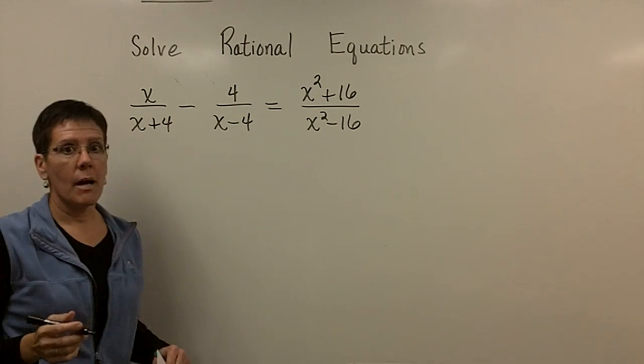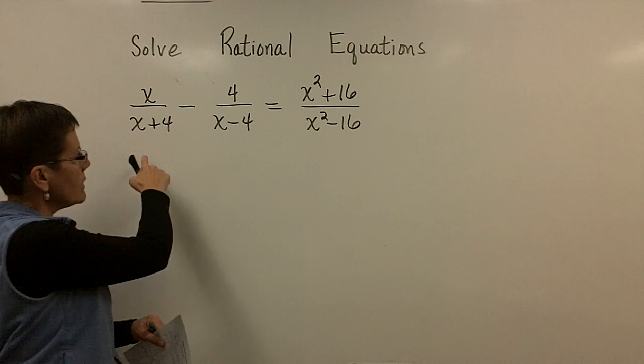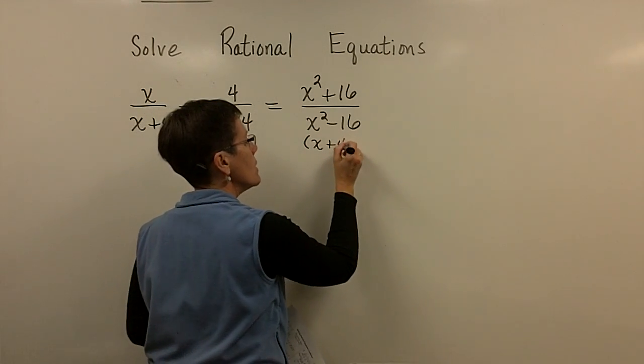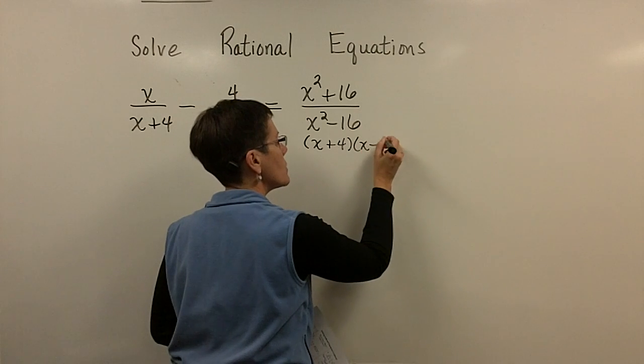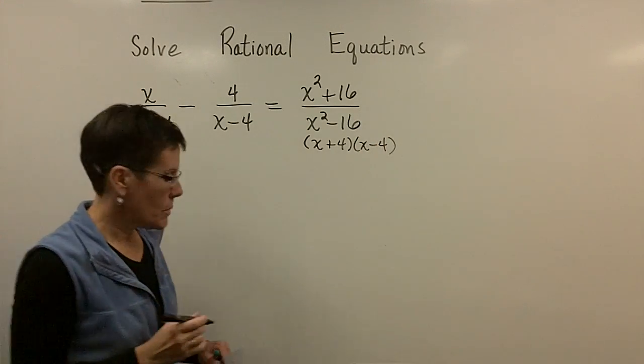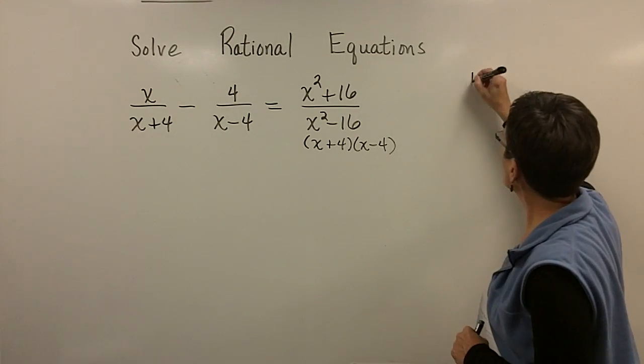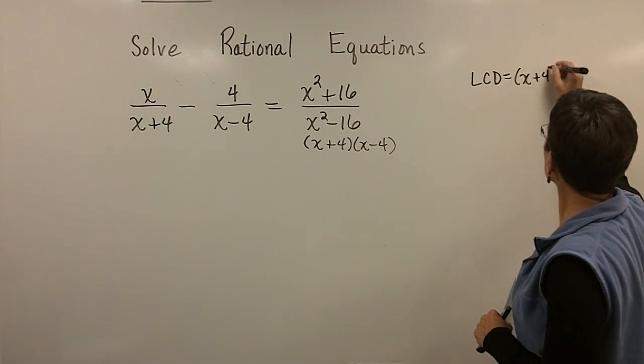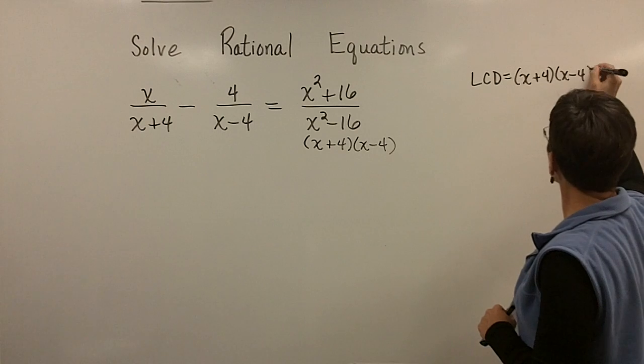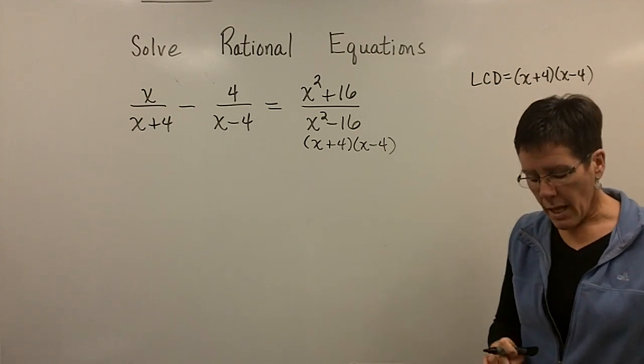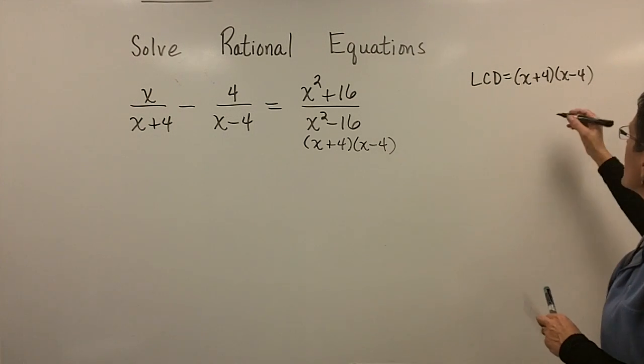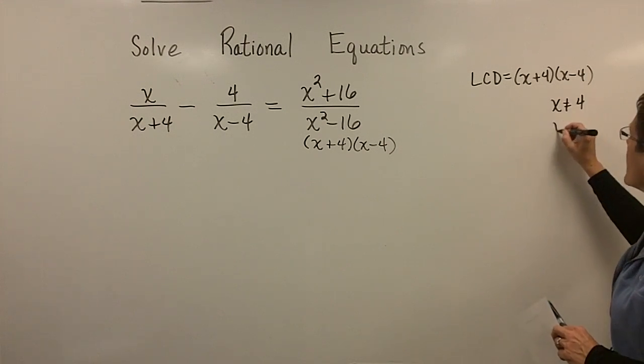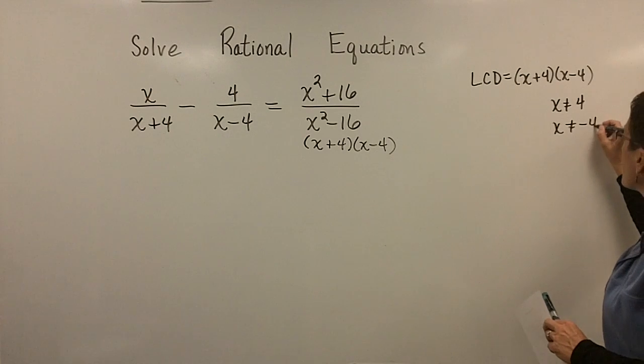Okay, so I factor my denominators, and these can't be factored, and I discover that this one is the difference of squares, so it can be factored into the product of those two binomials. So I'm going to come over here, and I'm going to notice that my LCD is x plus 4 and x minus 4.